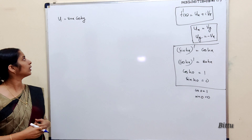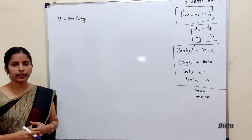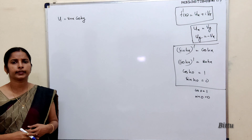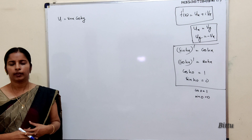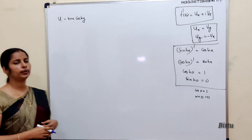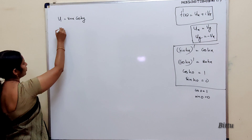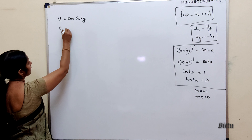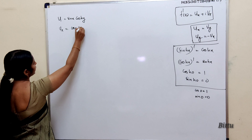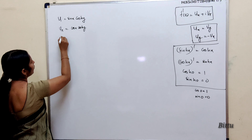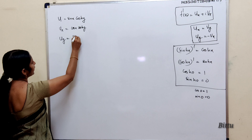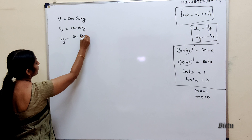Next: find an analytic function whose real part is sin(x)cosh(y). Here u is given. u = sin(x)cosh(y). So u_x = cos(x)cosh(y) and u_y = sin(x)sinh(y).